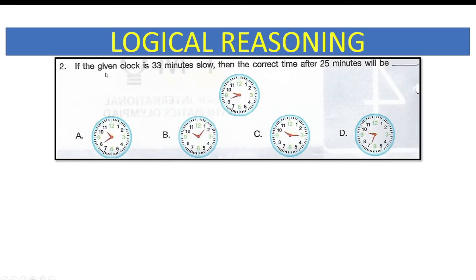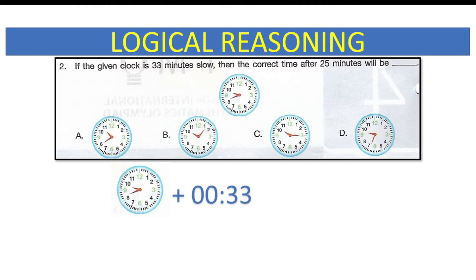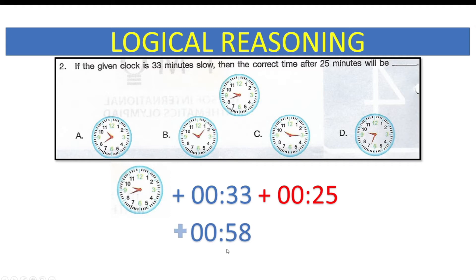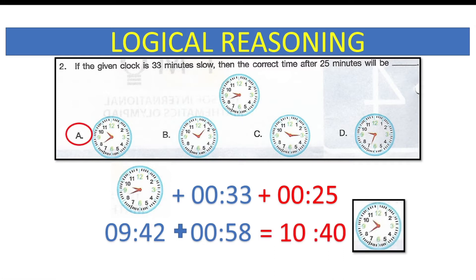The next question reads: if the given clock is 33 minutes slow, then the correct time after 25 minutes will be what? The given clock shows 9:42 at the moment. The clock is 33 minutes slow, so the correct time is plus 33 minutes. To that, add 25 minutes. The sum of these two is 58 minutes, which should be added to 9:42. Since 58 minutes is close to an hour minus 2 minutes, compute 10:42 minus 2 minutes, which equals 10:40 — option A.